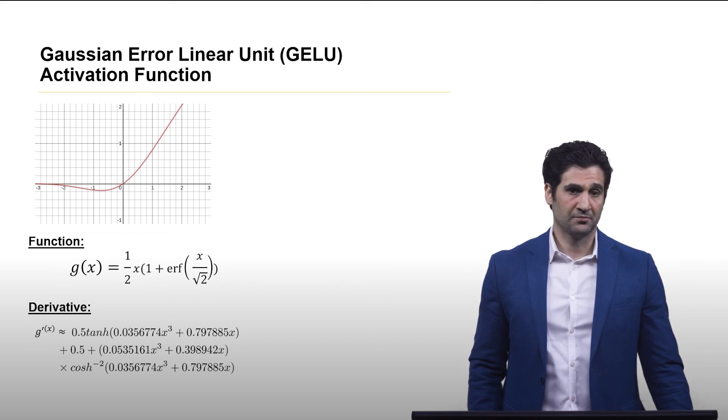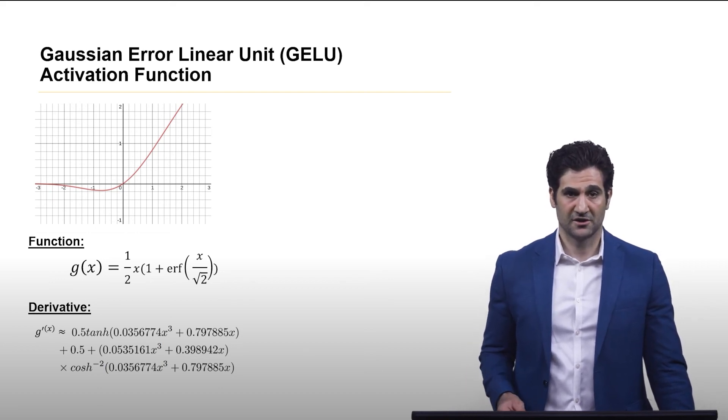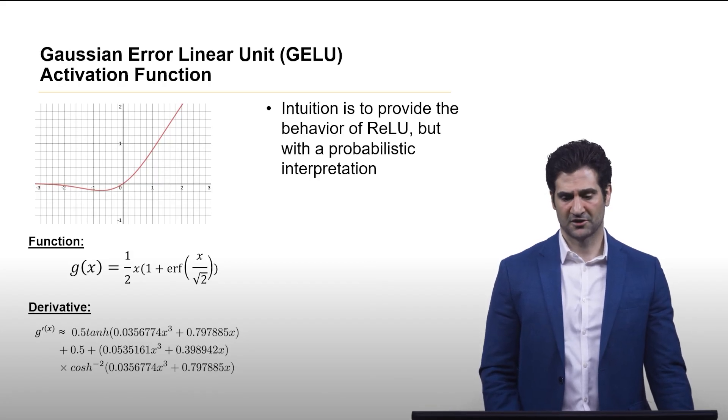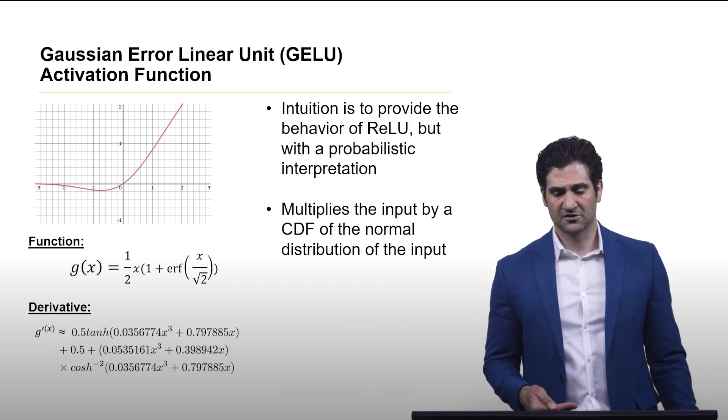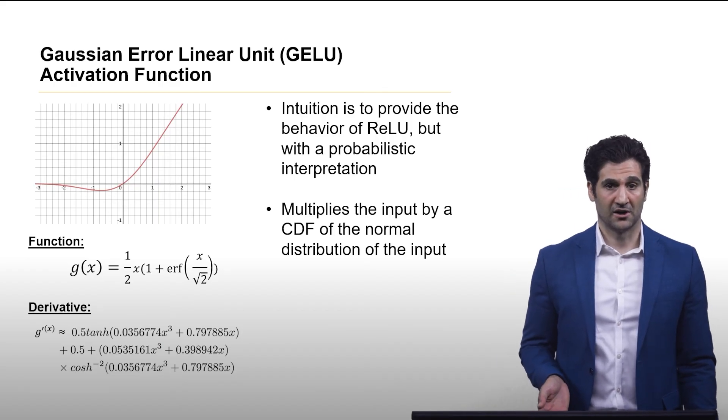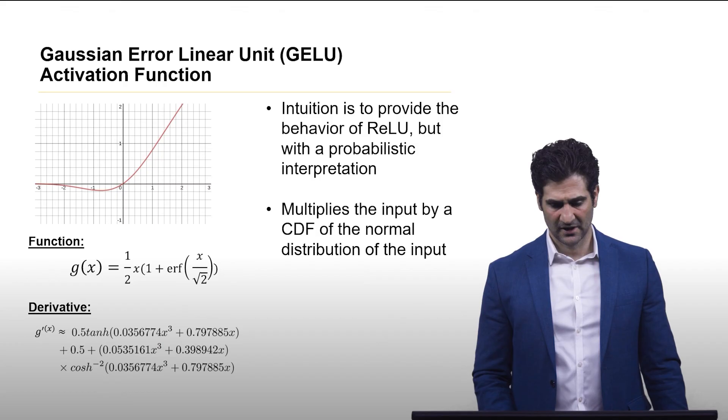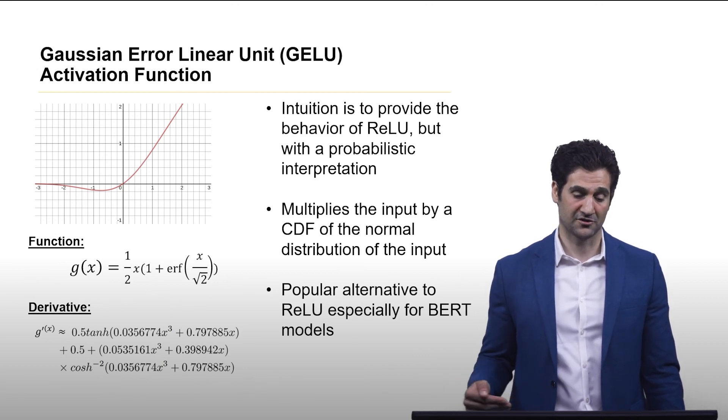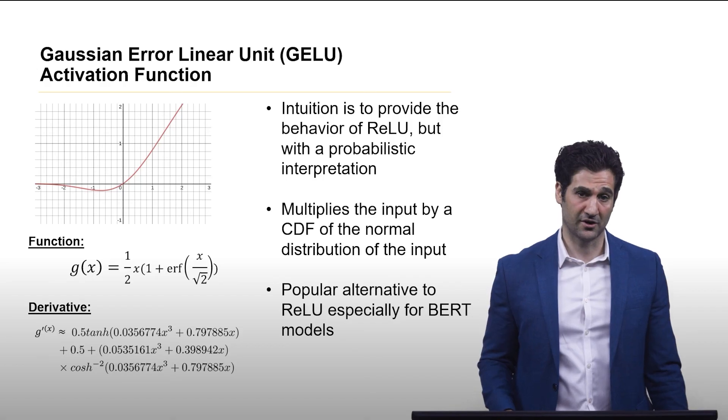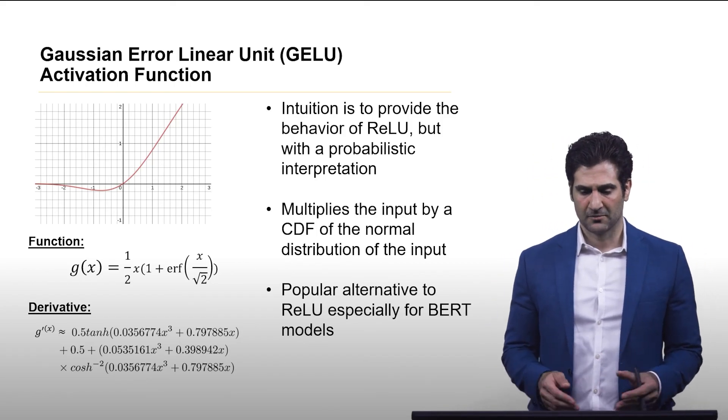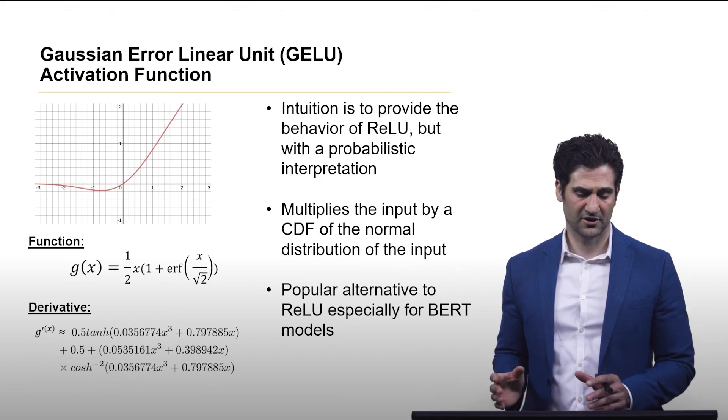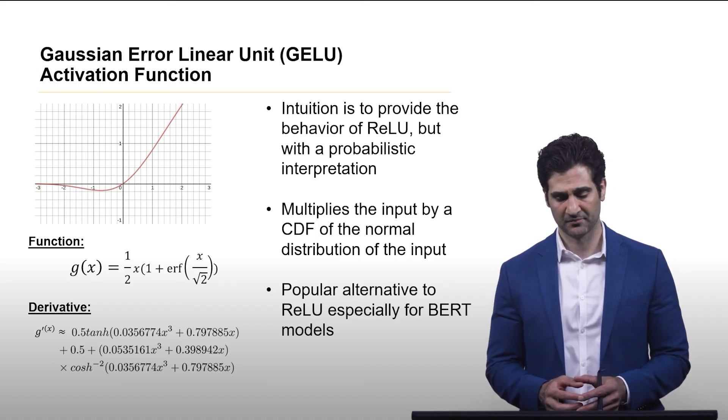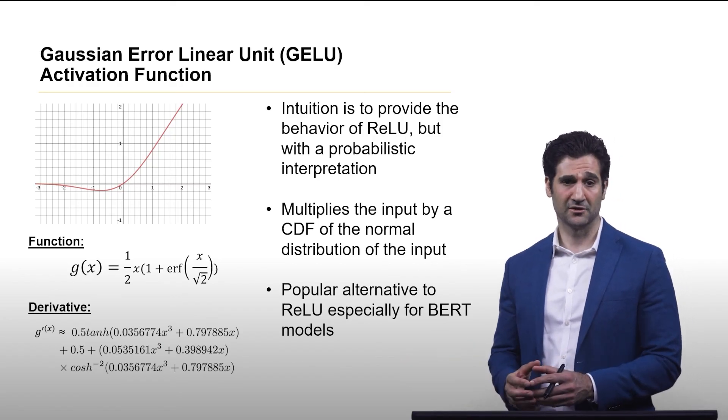A very recently introduced function, introduced in 2016, is the Gaussian error linear unit function. Now, this one is a more sophisticated version of RELU that has a probabilistic interpretation. What it's essentially doing is it's multiplying the input by a cumulative probability distribution function over the normal distribution of the input. And this is what has become very popular in the so-called BERT models, which is a transformer architecture used for things like language translation and stuff like that. Now, note that because of the use of the cumulative distribution function, oftentimes you will see approximations of both the function itself and its derivative. We show just the approximation of the derivative. In PyTorch, they actually have implemented the full version of this function.